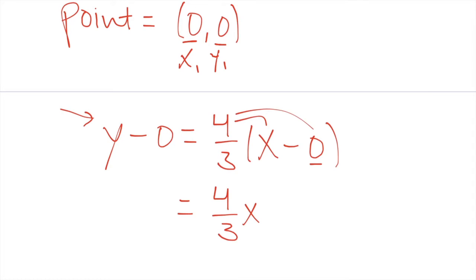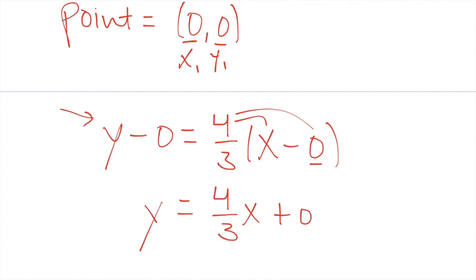y equals four thirds x, and if you really want to I guess you can put plus zero, you don't have to but I guess we'll leave it. And there we go. This now is the equation.